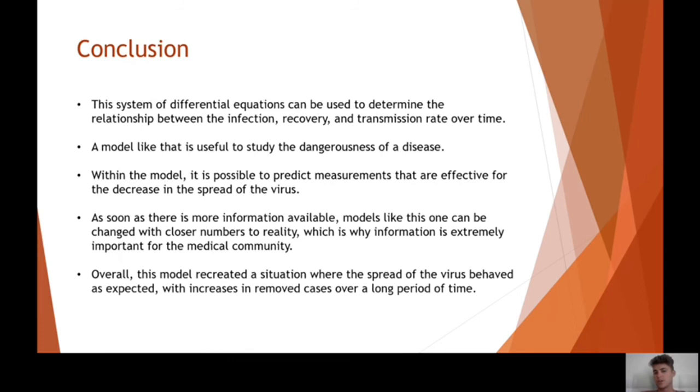In conclusion, this system of differential equations can be used to determine the relationship between the infection, recovery, and transmission rates over time. With this model, it's possible to know how dangerous the disease is. If the exposed rate and the infection rate are similar, it means that the infection rate is really high, so this outbreak can get into a lot of people really quickly. That's why it's so important to have a lot of information available, because with models like this we can change the initial conditions as soon as we know how the virus behaves. This is why information is extremely important to the medical community.